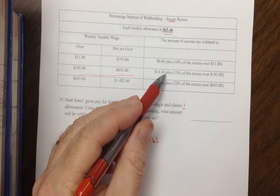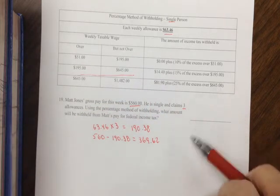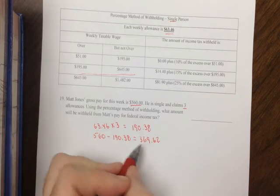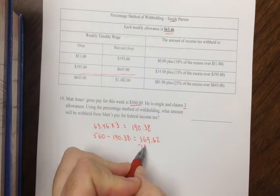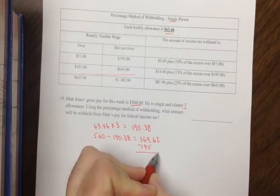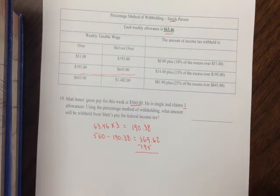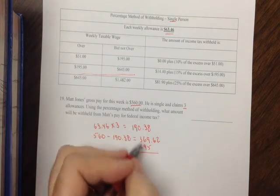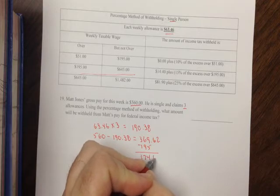The formula we will use is how much of this is greater than $195. So we do the subtraction and come up with $174.62.